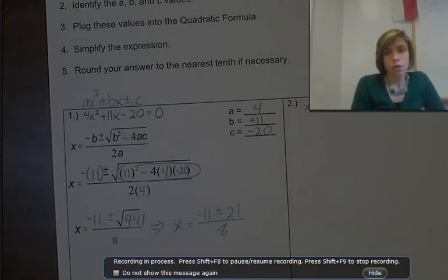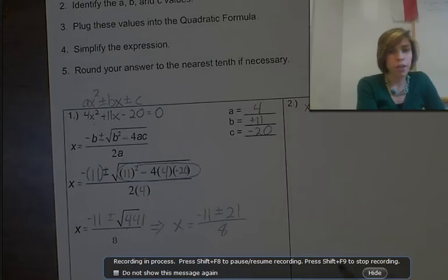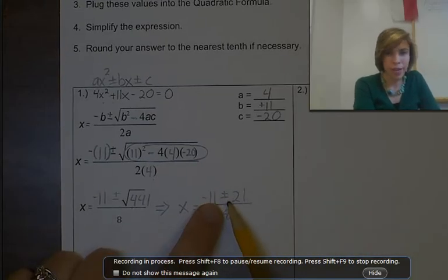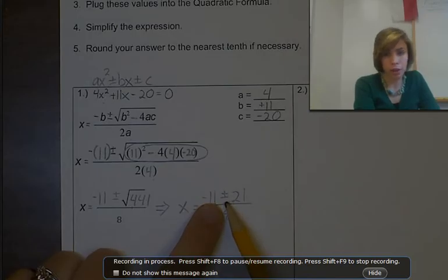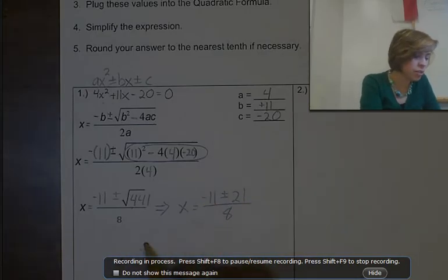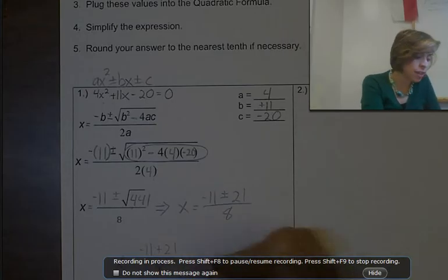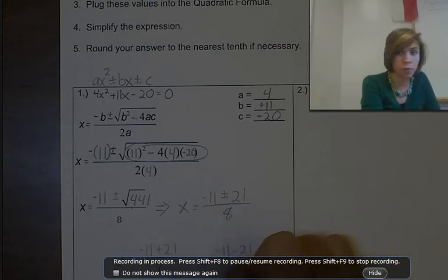I'm going to rewrite this as x equals negative 11 plus or minus 21 over 8. From here we're going to do something a little different — we're going to take one equation and make two equations. That's because the plus or minus means it's both things at once: two equations in one. So we break it up: one with plus — negative 11 plus 21 over 8 — and one with minus — x equals negative 11 minus 21 over 8.